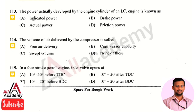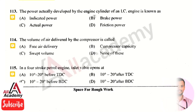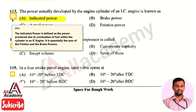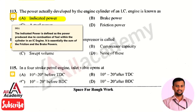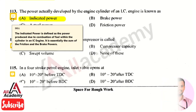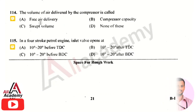The power actually developed by the engine cylinder of an IC engine is known as indicated power. Indicated power is defined as the power produced due to the combustion of fuel within the cylinder of an engine, and it is essentially the sum of frictional power and brake power.